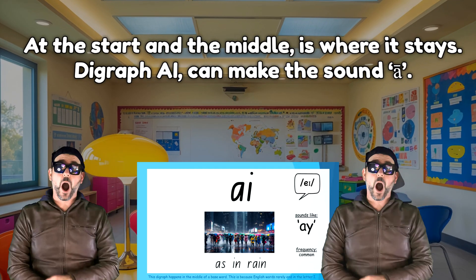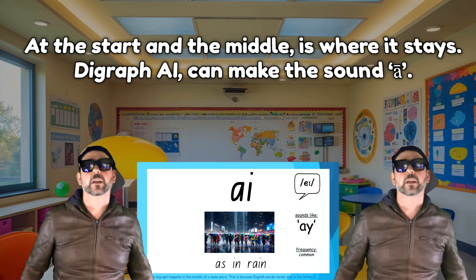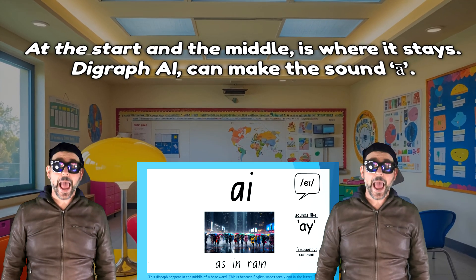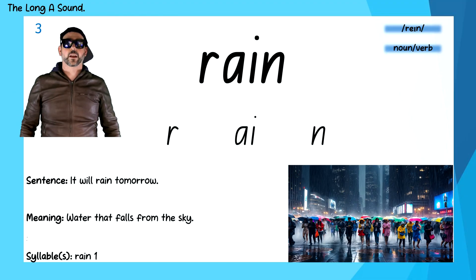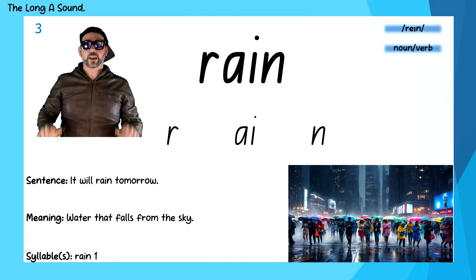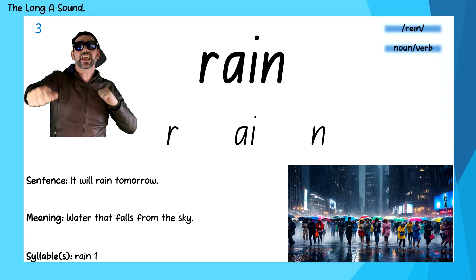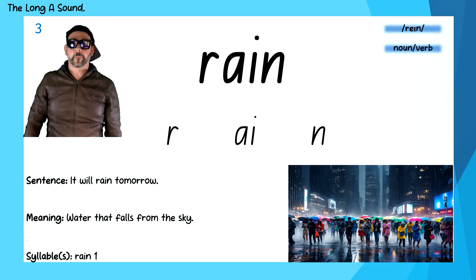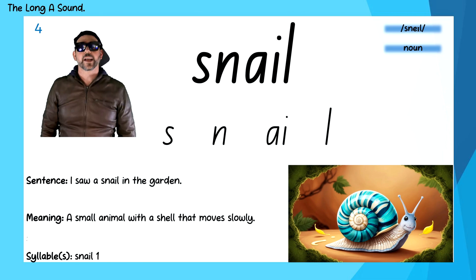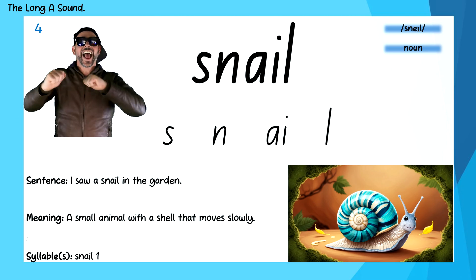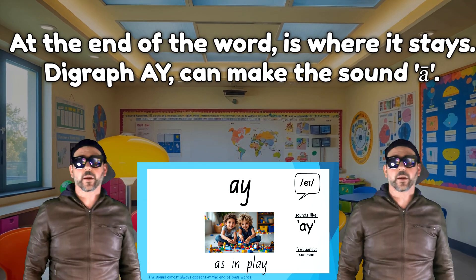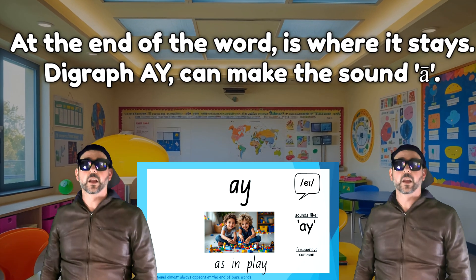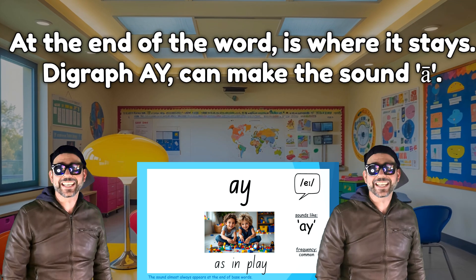Digraph AI can make the sound A. Rain — R-A-I-N. Snail — S-N-A-I-L. At the end of the word is where it stays.